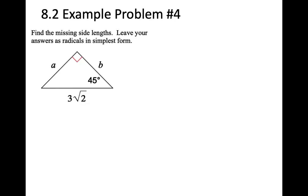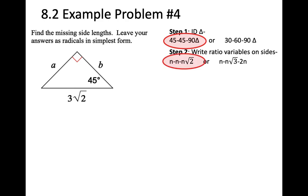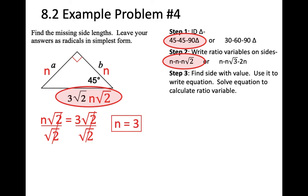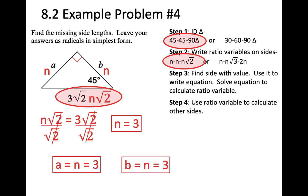Problem 4: find missing sides A and B. Step 1: it's a 45-45-90 triangle. Step 2: put on ratios N, N, N root 2. Step 3: the hypotenuse equals N root 2, and its value is given, so N root 2 equals the given value. Divide both sides by root 2, giving N equals 3. Step 4: A equals N, so A equals 3, and B equals N, so B equals 3. Both A and B are equal to 3.